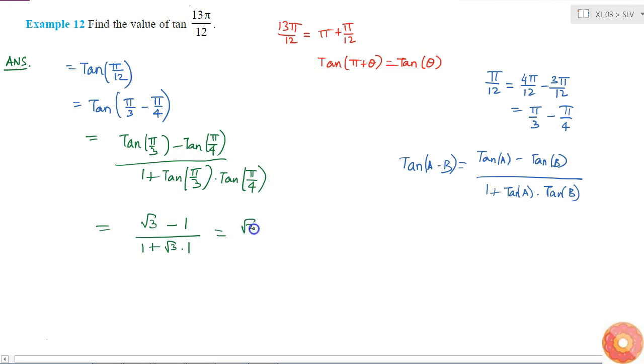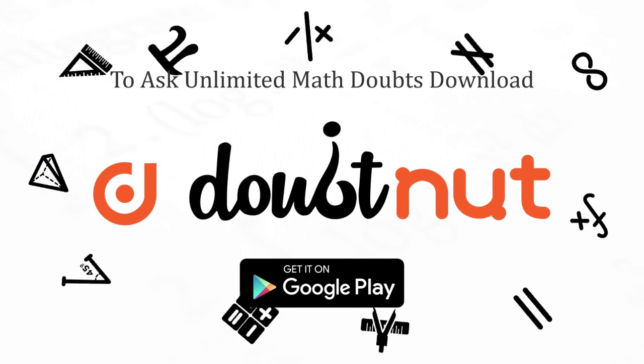So this is equal to √3 minus 1 by √3 plus 1. I wrote 1 plus √3 as √3 plus 1. So this is my final answer.